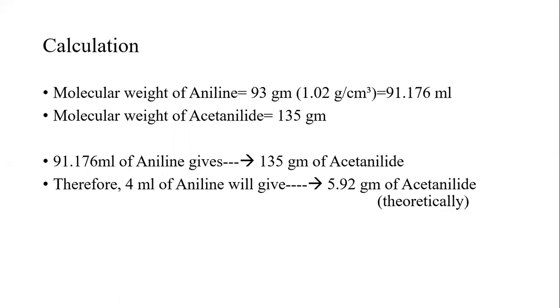So we will see how much percentage yield we got. Practical yield is the weight you will take in the lab using the weighing machine divided by the theoretical yield. It means practical yield, the weight of the compound you prepared, divided by 5.92 and multiply it with 100. This will give you the percentage yield. So I think now you can understand how the preparation of acetanilide from aniline takes place. Thank you so much.